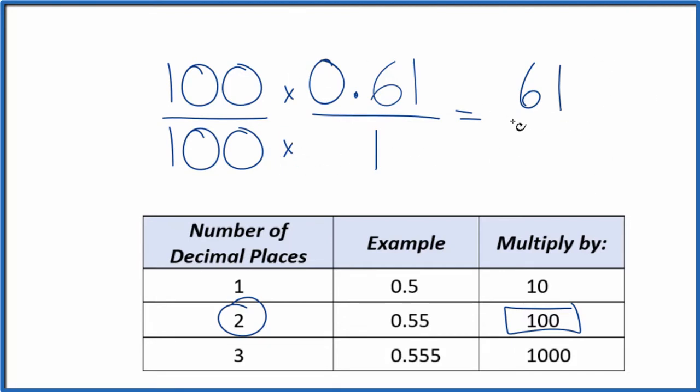So 100 times 1, that's 100. And we have our fraction, 61 over 100, which we can't reduce any further. If you divide the fraction 61 over 100, you end up with the decimal 0.61.